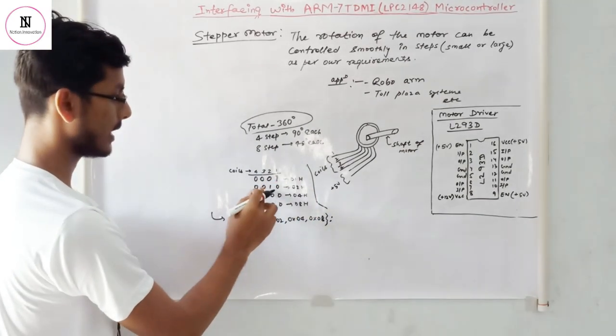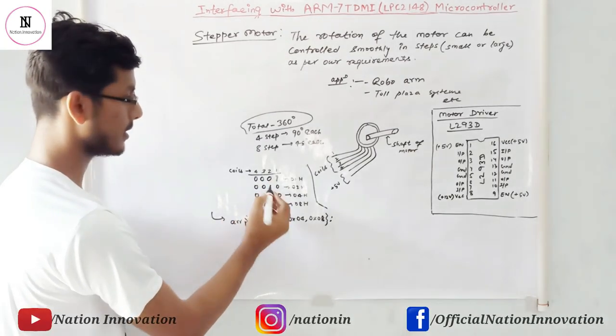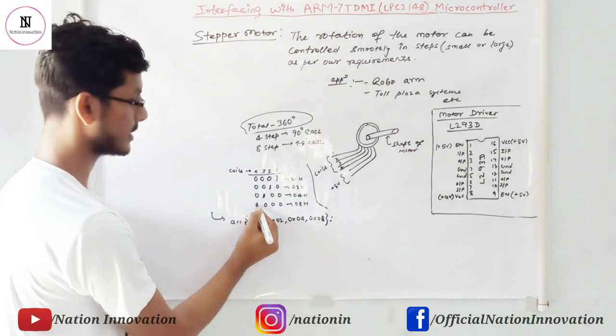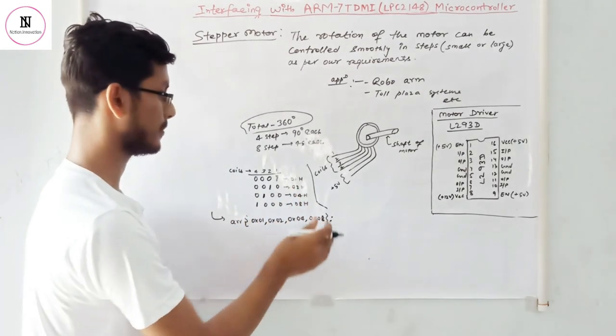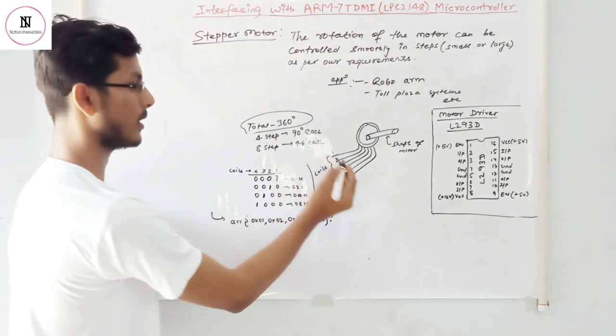And the second case, we are giving the plus 5 volts to the coil 2. And in the fourth step, we are giving 1 to the coil 4. In this way, we are providing high to different coils.